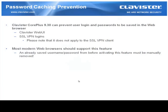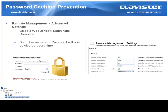Password caching prevention. Clavister Core Plus 9.30 can prevent user login and password from being saved in the web browser. This applies to the Clavister web UI and SSL VPN logins, but not to the SSL VPN client. Most modern web browsers should support this feature. However, if you have already saved the username and password before activating this feature, it must be manually removed from within the web browser. To enable this feature, go to System, Remote Management, and select Advanced Settings. In the web UI section you will find the feature Web UI Allow Login Autocomplete, which you disable. Every time you reach the login page, the username and password will be cleared.